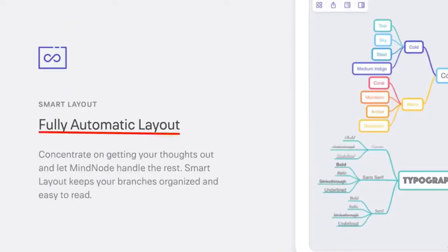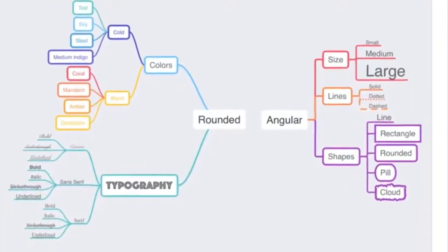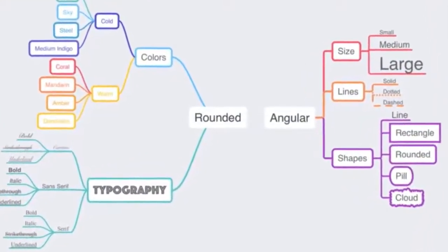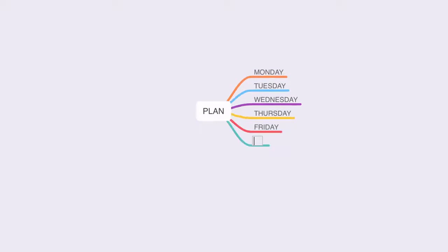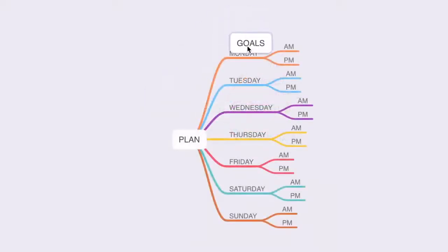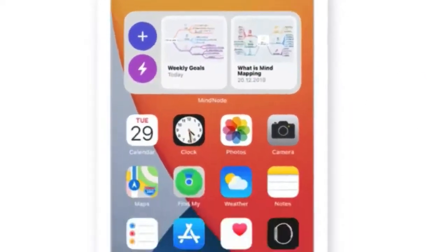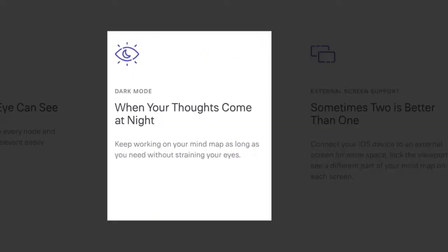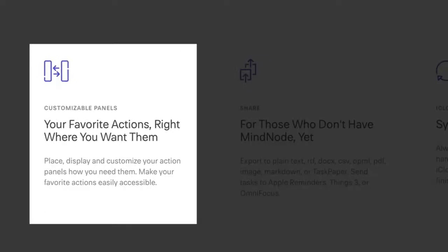MindNode has a smart layout, which I actually love. Every node automatically adjusts so that it's always evenly spaced, giving you a consistent look and feel to your mind maps. As you brainstorm and add information to your nodes, or even as you slip in nodes, your mind map adjusts automatically. Other noteworthy features include dark mode, external screen support, and customisable panels — you can actually customize your action panels to display the actions you use most. Nice touch.